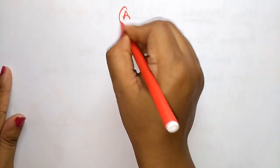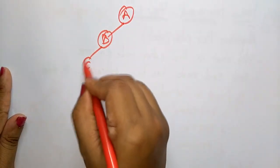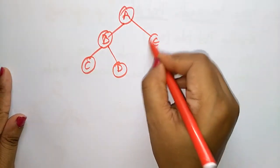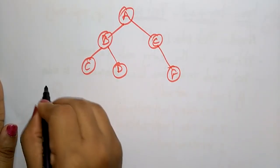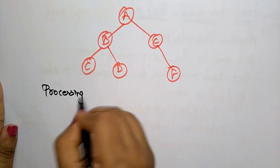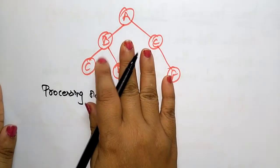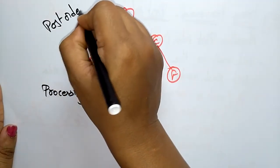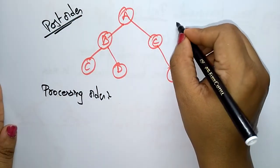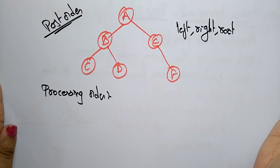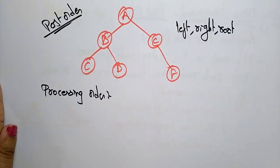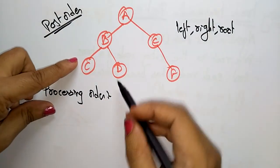Let me explain with an example. Let us take our regular tree: A, B, C, D, E, F. Now let us see the processing order. Post-order means the condition is left, right, root — the root will come last. First, visit the left subtree.